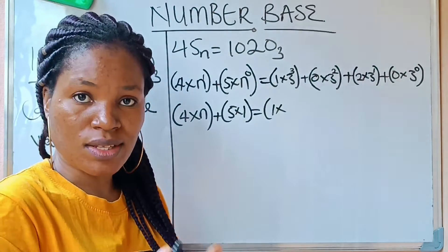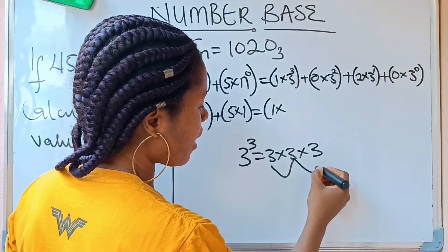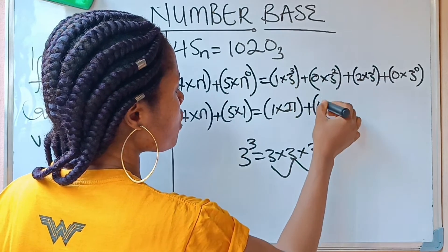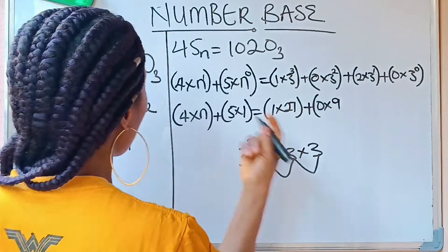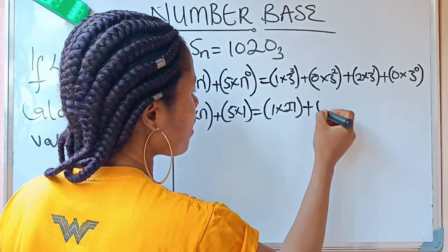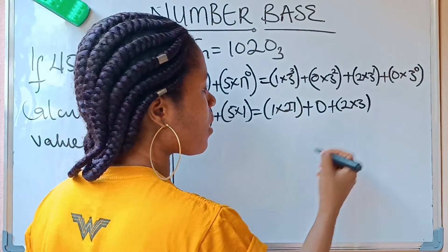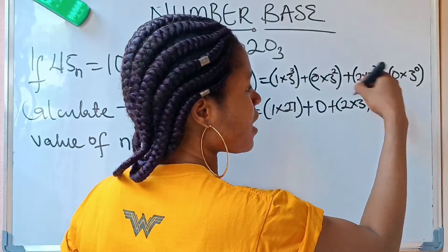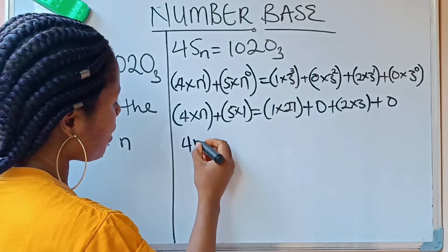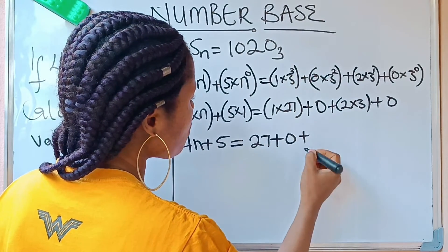On the right side: 3 raised to the power of 3 is 27, so 1 times 27 is 27. Then 0 times 3 squared is 0. Then 2 times 3 raised to the power of 1 is 2 times 3, which is 6. Then 0 times anything is 0. So the right side totals: 27 plus 0 plus 6 plus 0. Therefore we have the equation: 4n plus 5 equals 27 plus 6.